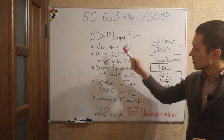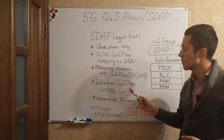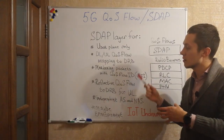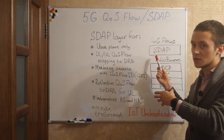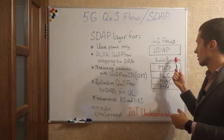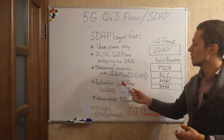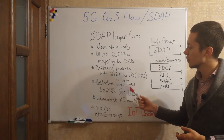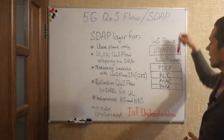This layer supports the feature called reflective quality of service, which is when this layer sets the same parameters — the same settings for uplink as in downlink. So in uplink we have the same mapping and the same rules for quality of service flow to data radio bearers as in the downlink direction.